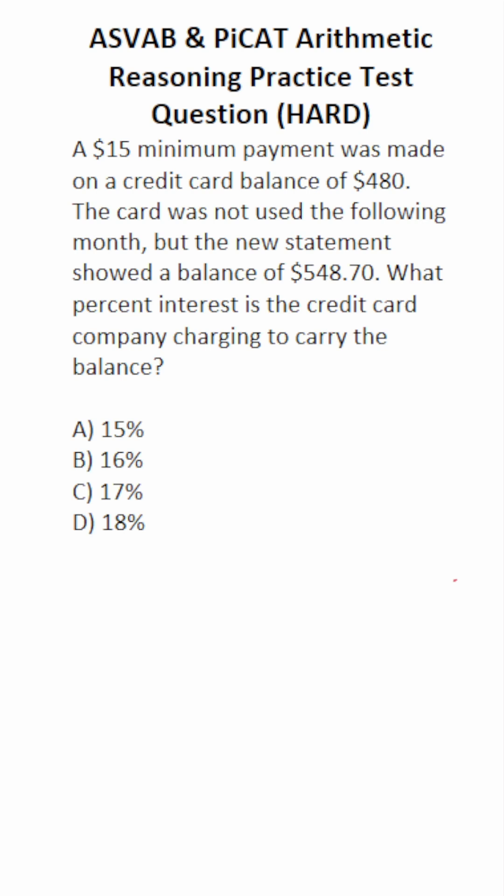So we're going to use the percent change formula to solve this one. Percent change is equal to the new value minus the old value over the old value. This will result in a decimal that you can then multiply by 100 to convert that decimal to percent. Most people can do that part mentally. Let's go ahead and start filling this formula in.